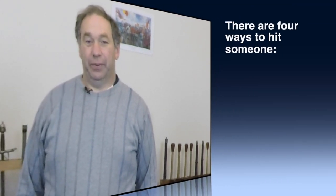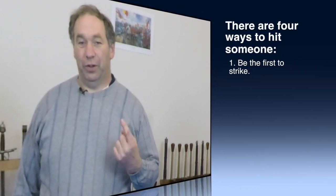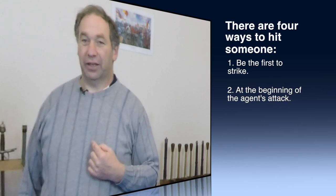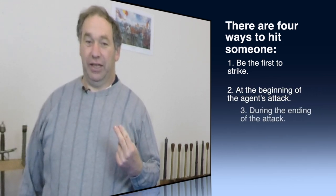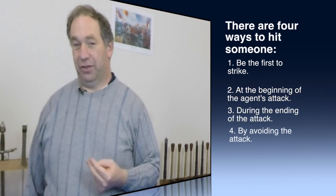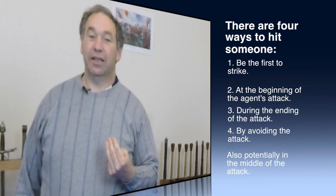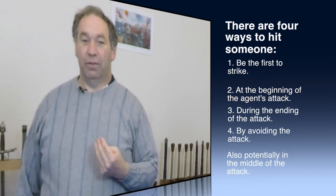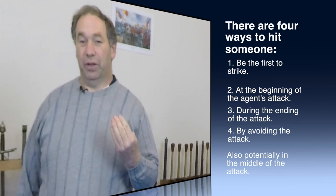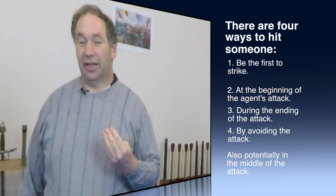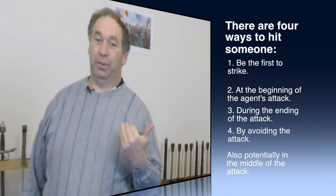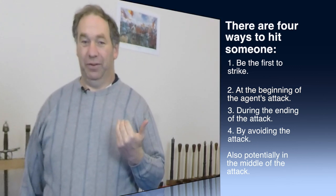There are four ways to hit someone. The first is be the first to strike. Second is at the beginning of the agent's strike. Third is at the ending of the agent's attack. Fourth is by avoiding his attack. And we'll throw in a fifth potential, which is in the middle of his attack. So let's begin by examining the first one: be the first to strike.